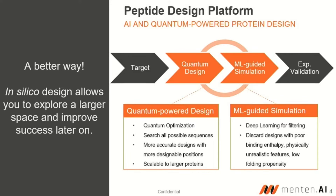One way of doing that is by exploring in silico or computational methods, so that rather than having to synthesize all these molecules, we can actually just design them on a computer and screen them in a much faster way. But the chemical space is so large that it's extremely hard to do that. It's only in the last five years that technology has come to a point where we can begin to do that. At Maintain AI, we developed a peptide design platform where we can take a drug target of interest and combine quantum and machine learning methods in order to design a molecule of interest.